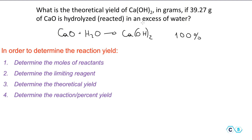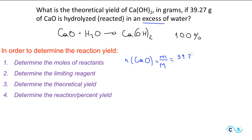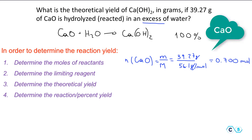In this case, water is in excess, so we don't need to worry about the limiting reactant — we just need to find the moles of calcium oxide. The moles of calcium oxide equal the mass divided by its molar mass: 39.27 grams divided by 56.1 grams per mole, which gives us 0.700 moles of calcium oxide. We'll use this number for our calculation.